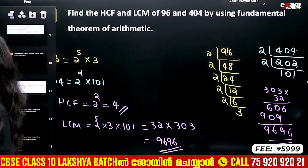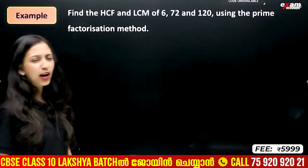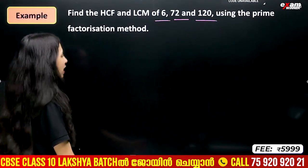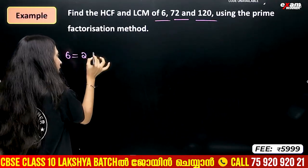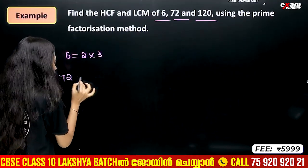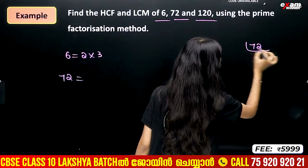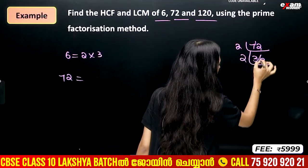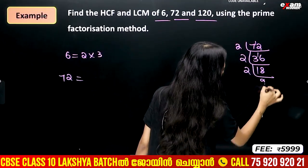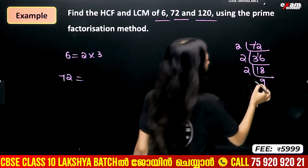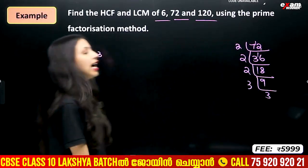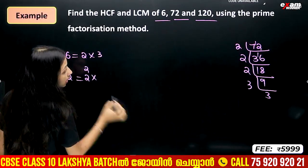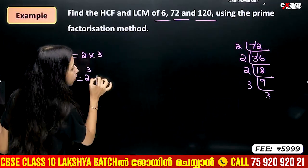What about three numbers? We find HCF and LCM of 6, 72, and 120. Prime factorization of 6 is 2 into 3. Prime factorization of 72 is 2 cubed into 3 squared.